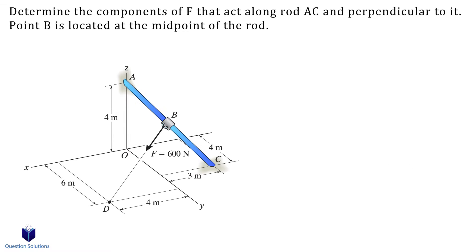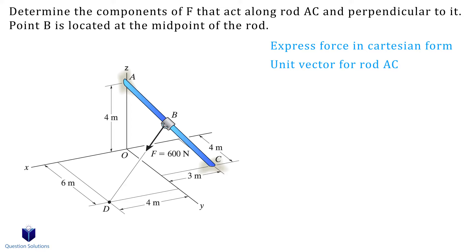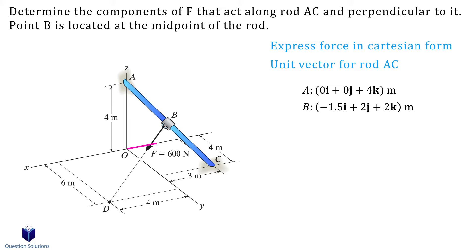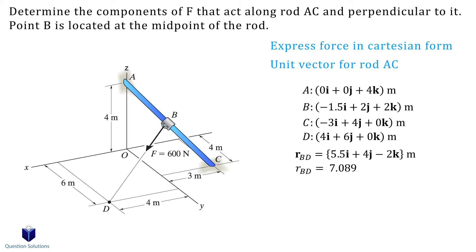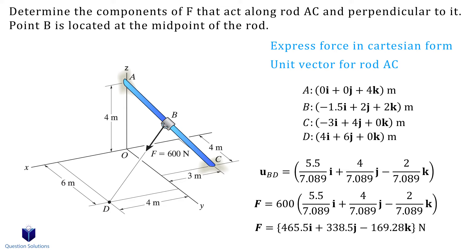Let's take a look at this problem, where we need to find the projected component of the 600 newton force along rod AC. Unlike the previous question, our force isn't given in Cartesian form, so we need to express it as such. After that, we need a unit vector for rod AC. We first need to write down the locations of all the points of interest — point A, then point B. The question says point B is at the midpoint of rod AC, so the x component would be 1.5 meters in the negative x direction, the y component would be 2 meters, and the z component would also be 2 meters — we're just dividing the distances by 2. Next, we have points C and D. To express the 600 newton force in Cartesian form, we need a position vector from B to D. Now we need the magnitude of this vector. Next, we divide each component in our position vector by the magnitude, which gives us our unit vector. We multiply the magnitude of the force by the unit vector, and that is our force expressed in Cartesian form.